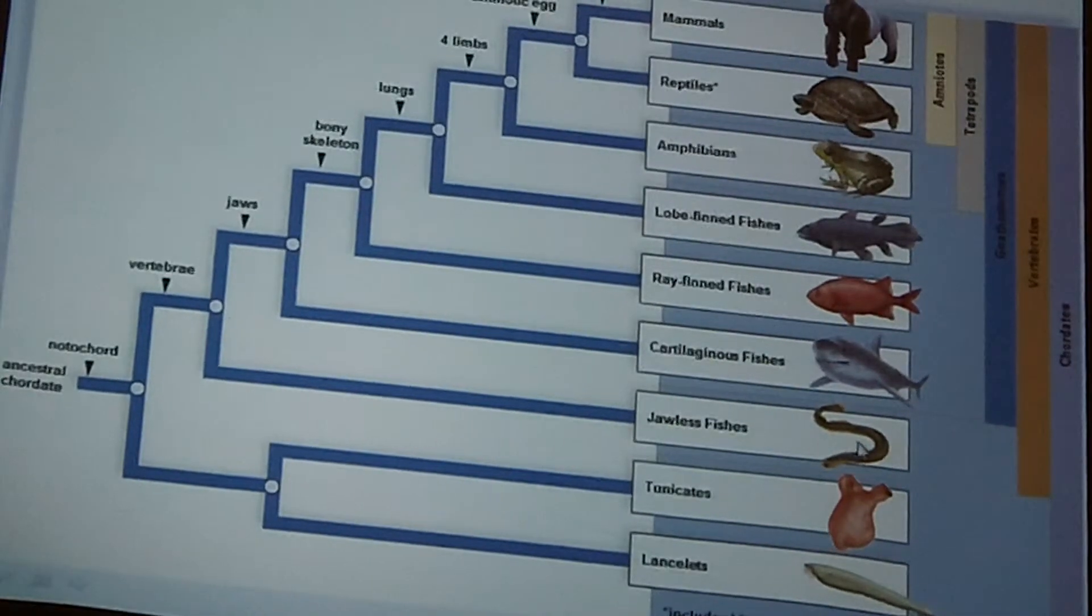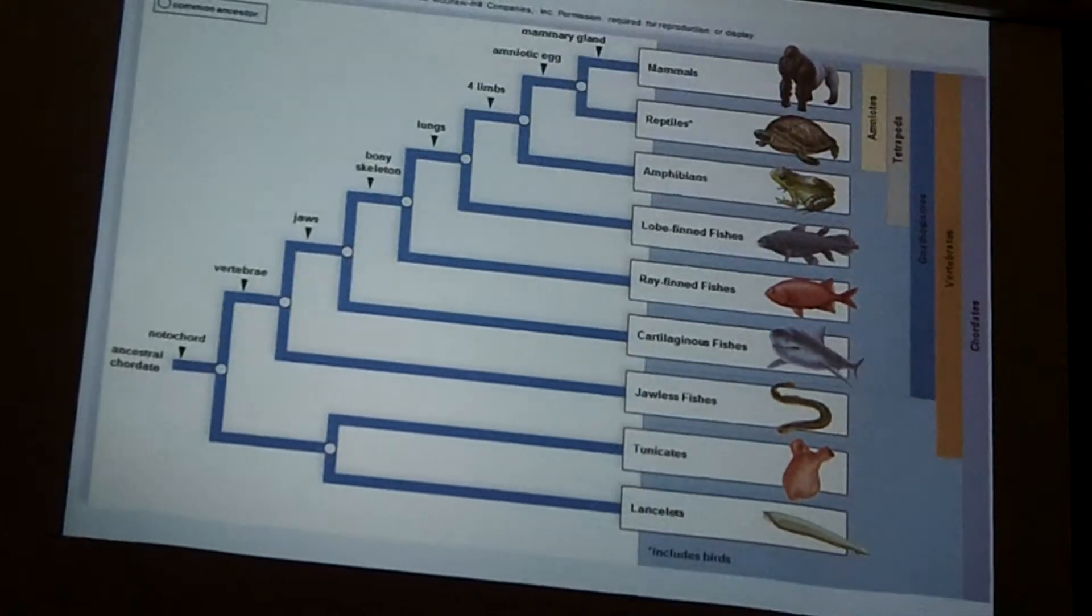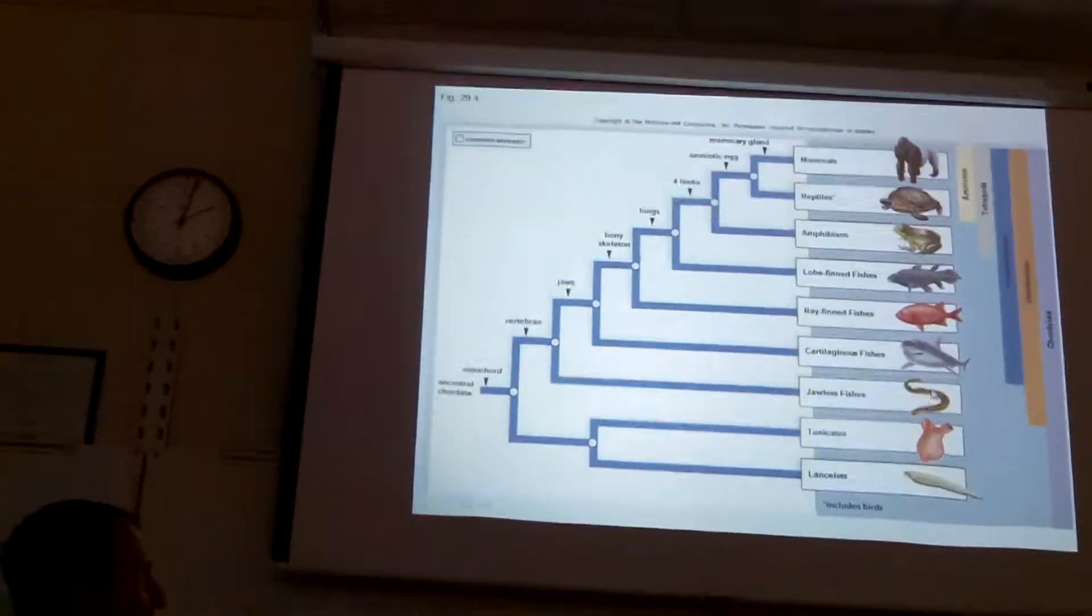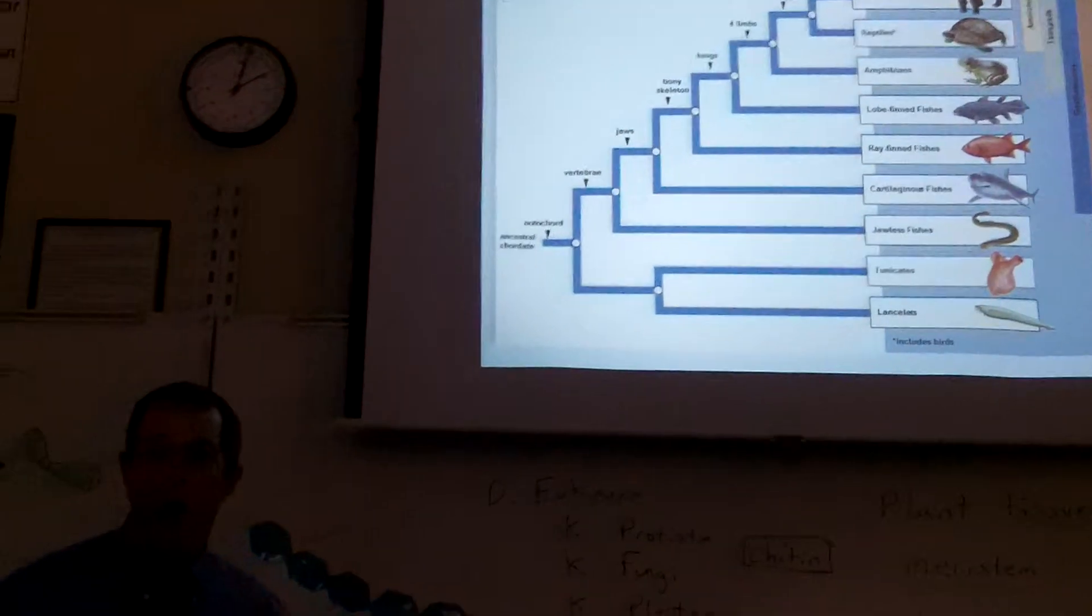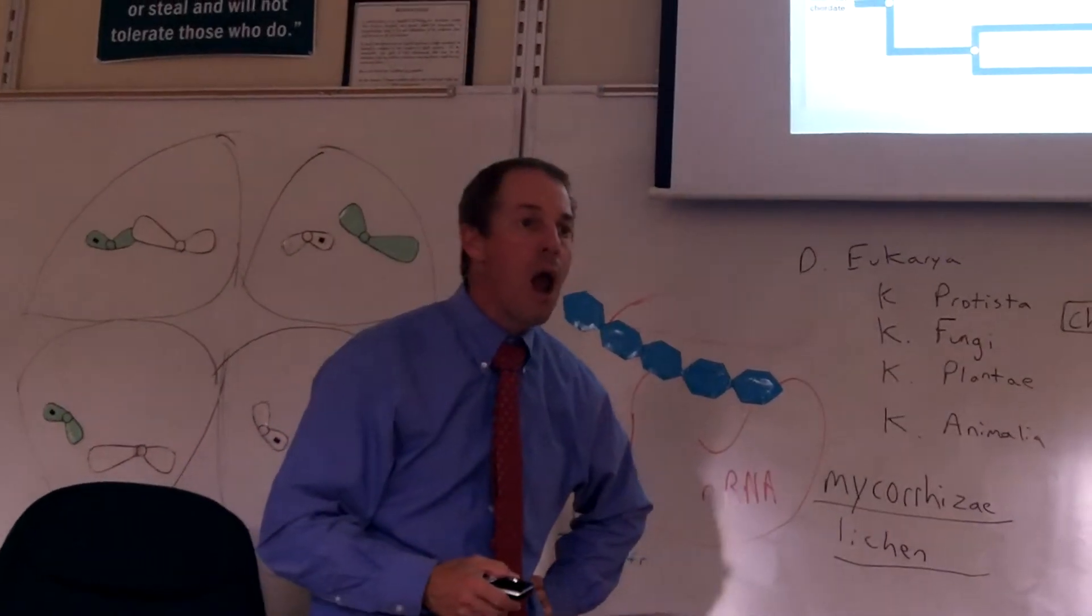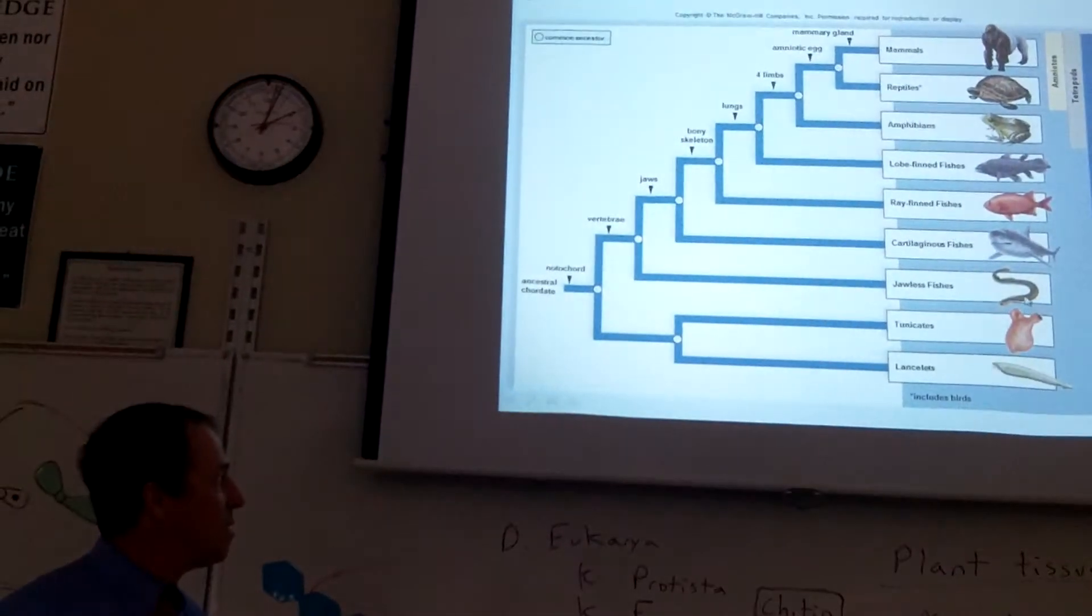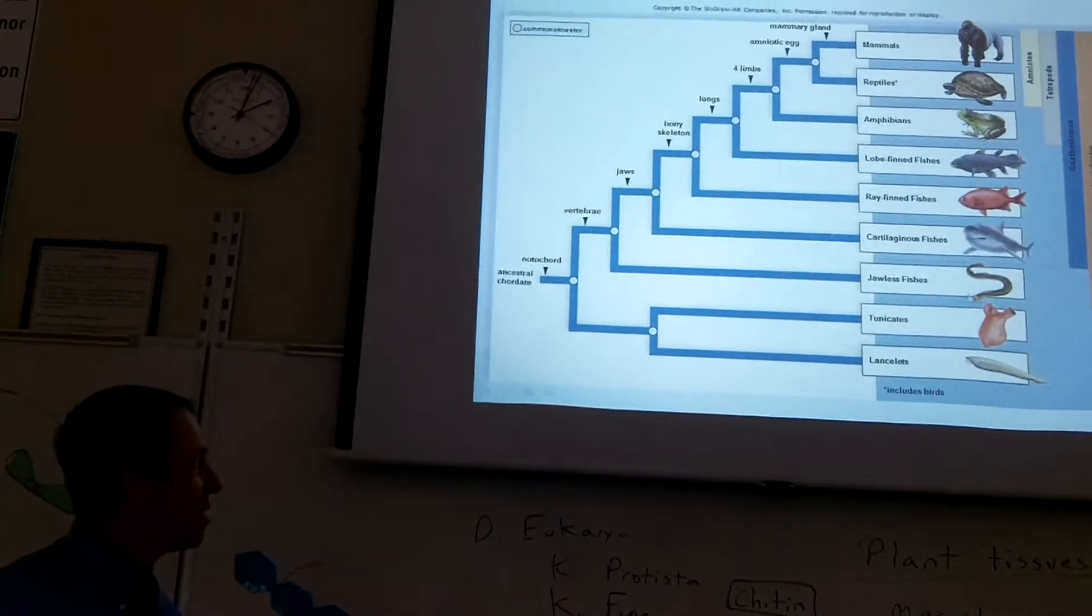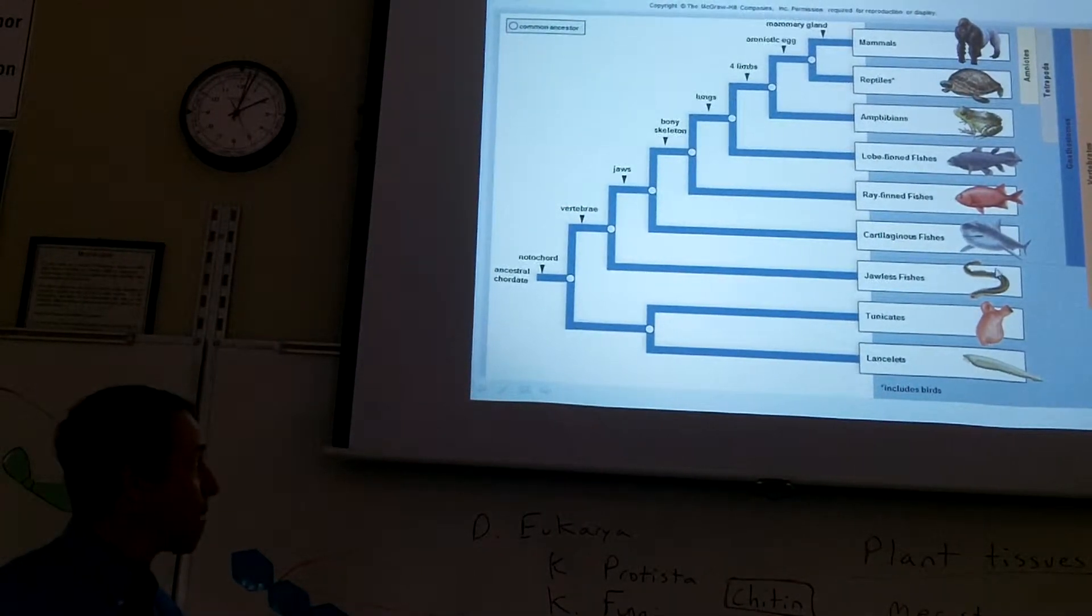And here they are, the jawless fish. There's only two types of jawless fish left on Earth. The hagfish and the lamprey. All the other jawless fish are extinct. Imagine a fish that couldn't close its mouth because it didn't have a jaw. Swims around with an open mouth. The lampreys will suction onto something and suck their blood. And the hagfish, weird looking, gross, sift through the mud. I'll show you some pictures.